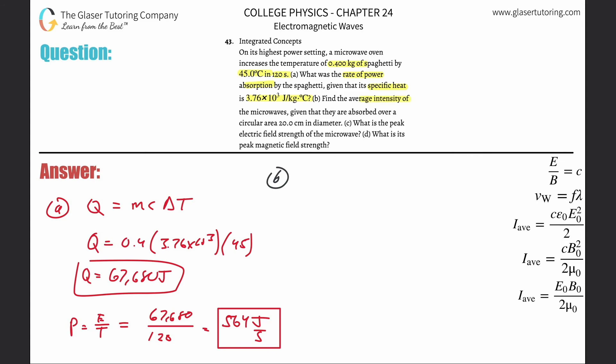Letter B, find the average intensity, given that they are absorbed over a circular area of 20 centimeters in diameter. In order to find the intensity we need to know the power, we need to know the area.